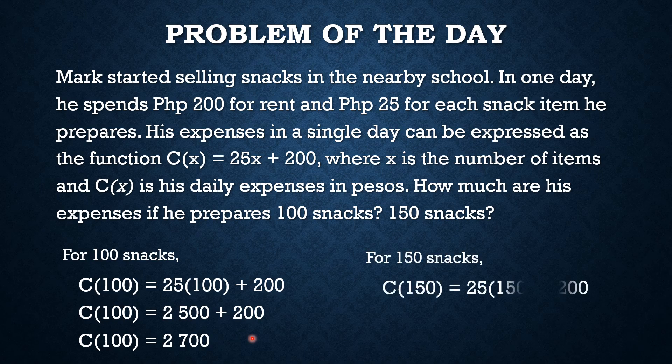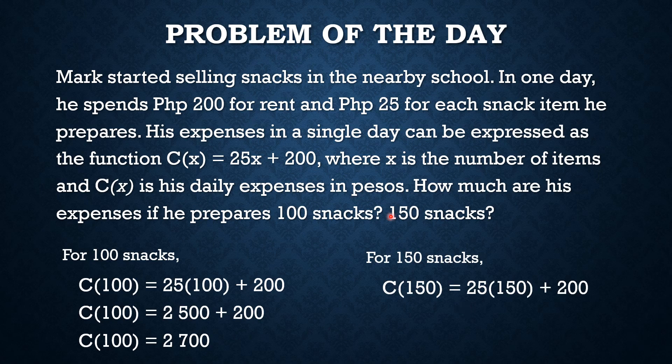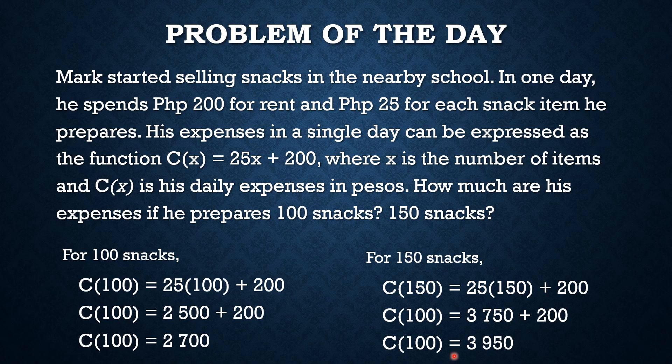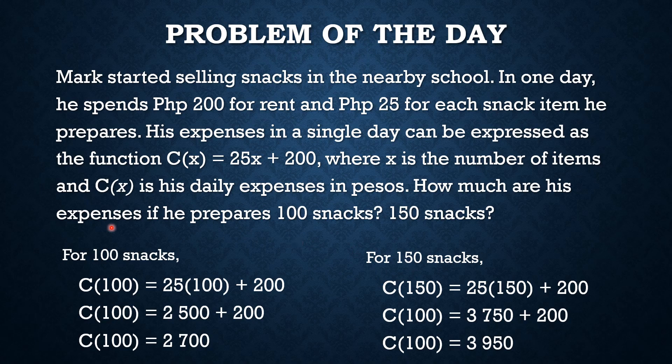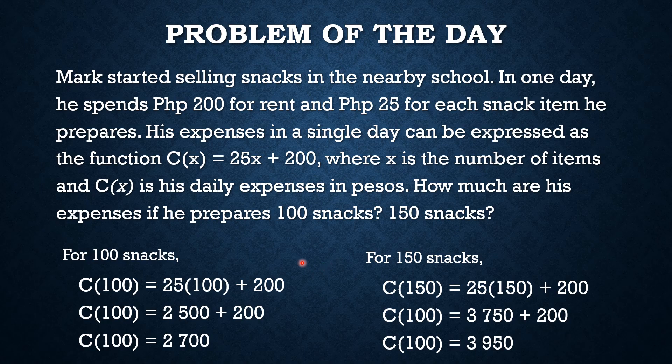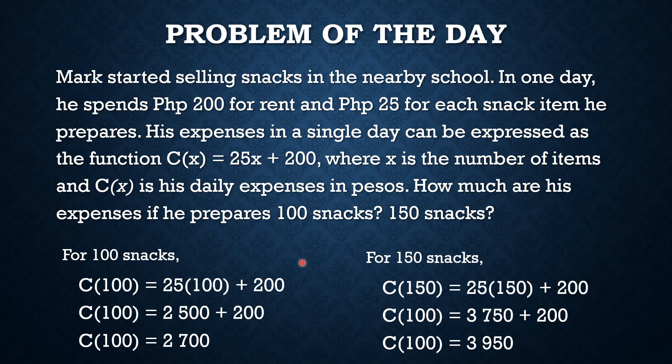For 150 snacks, following the same procedure, substitute natin si 150 sa ating function, sa ating mga variable na x. So c(150) = 25 times 150 + 200. 25 times 150 is 3,750 plus 200, and that gives us 3,950. Therefore, for 150 snacks, he has to prepare 3,950 as his daily expenses in pesos. And that is how we use the process and our understanding in evaluating functions to solve real-life problems.